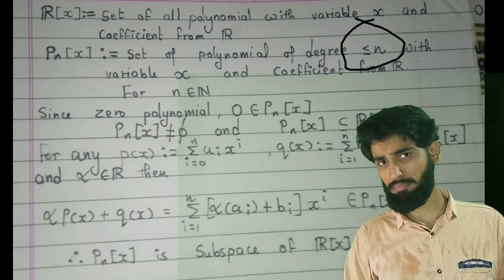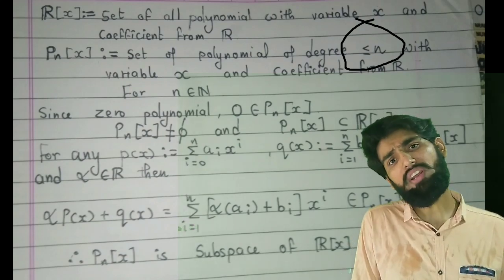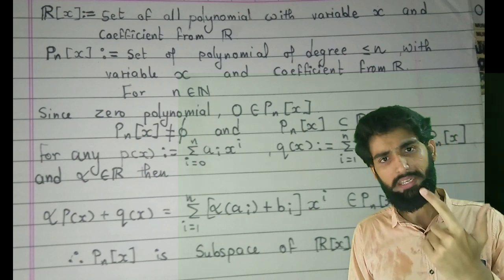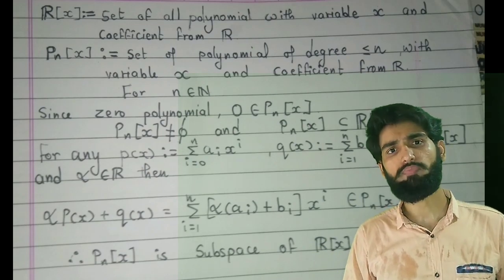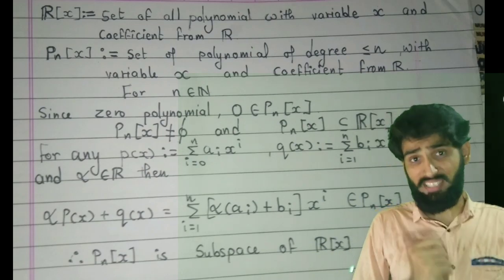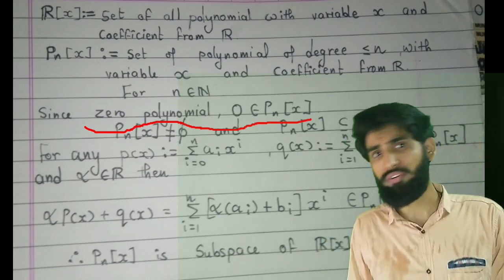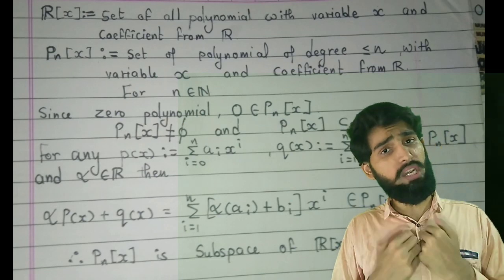Now I want to prove this is a subspace of R[x]. We know that how can we prove it is a subspace - it should be non-empty, it should be subset, it should satisfy that condition. This will be non-empty since we know that the 0 polynomial is an element of it.